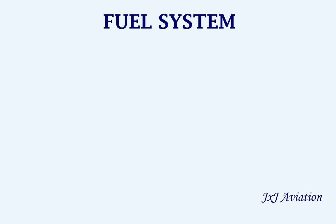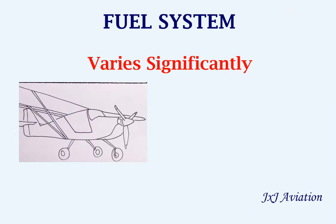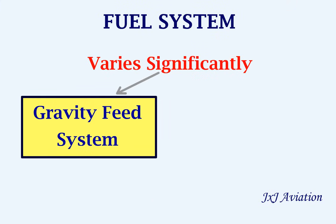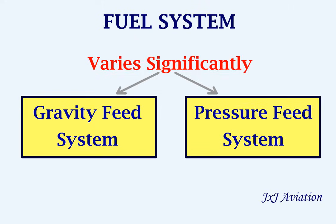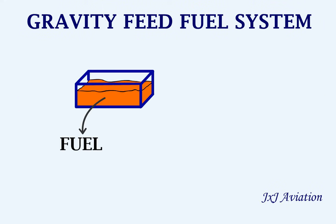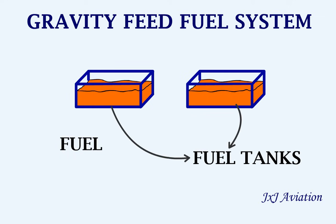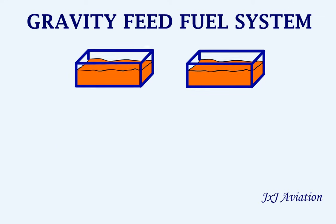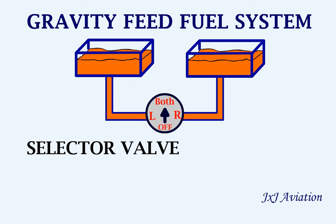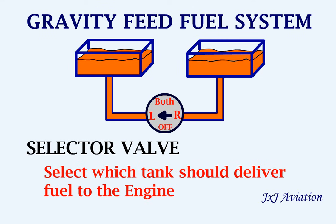The fuel system varies significantly for each aircraft, so I have generally classified them as gravity feed system and pressure feed system. In a gravity feed system, the fuel will be stored in one or more fuel tanks. From the tanks, the fuel flows through a selector valve. This selector valve can be used to select which tank should deliver fuel to the engine. Fuel can be taken only from the left tank or only from the right tank.